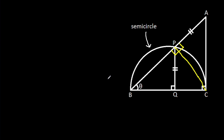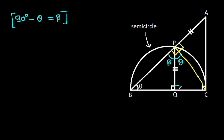Now, this angle will be 90 degrees minus theta — suppose it is beta. So if this angle is beta, then this angle will be 90 degrees minus theta, which gives theta. And this angle will be 90 degrees minus theta, which gives beta. Since this angle is 90 degrees, this angle will again be beta.